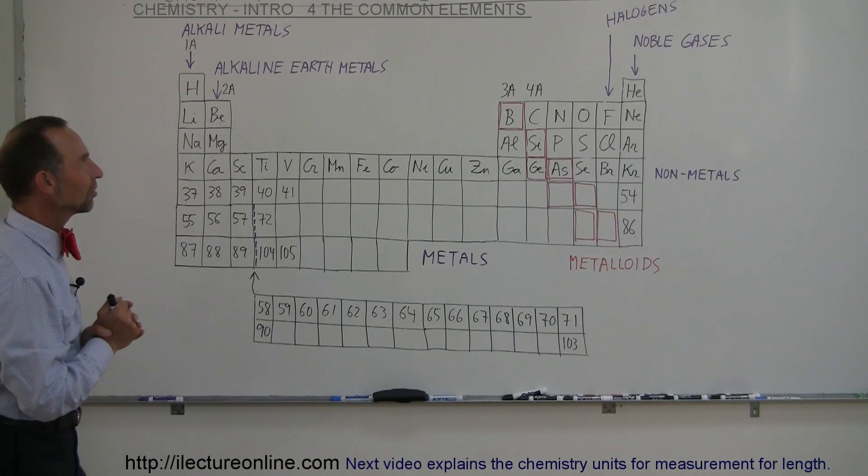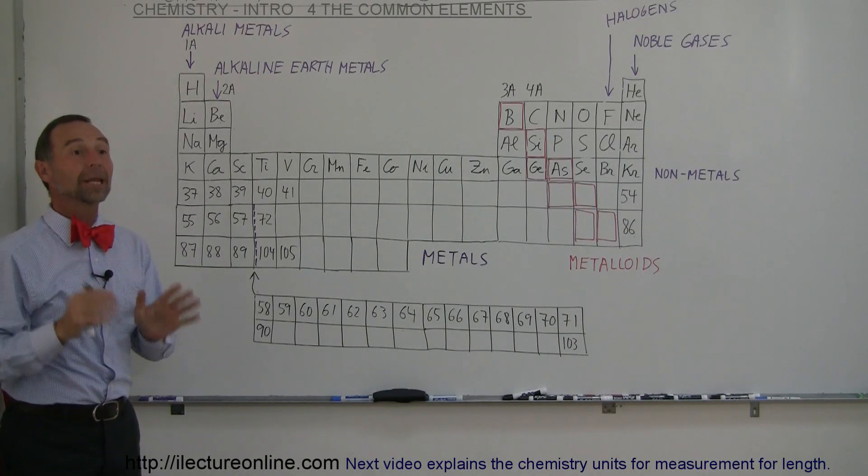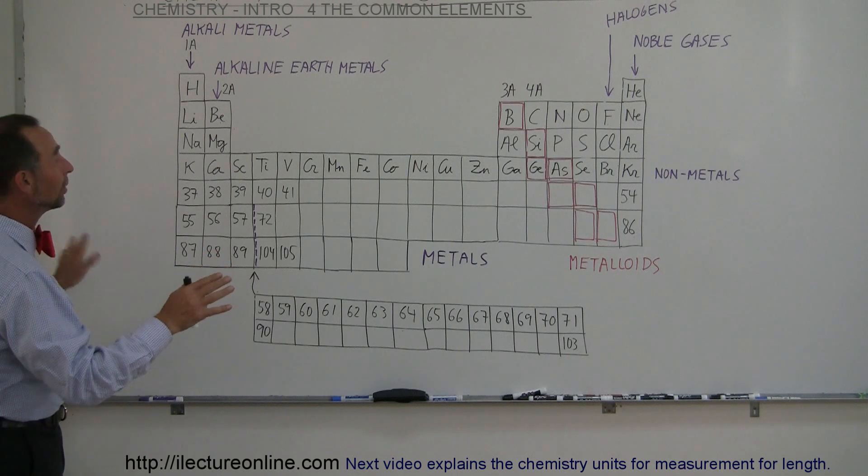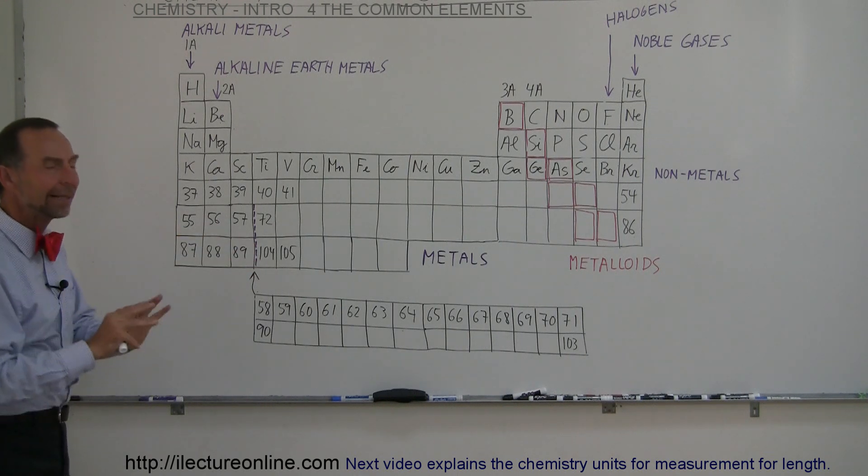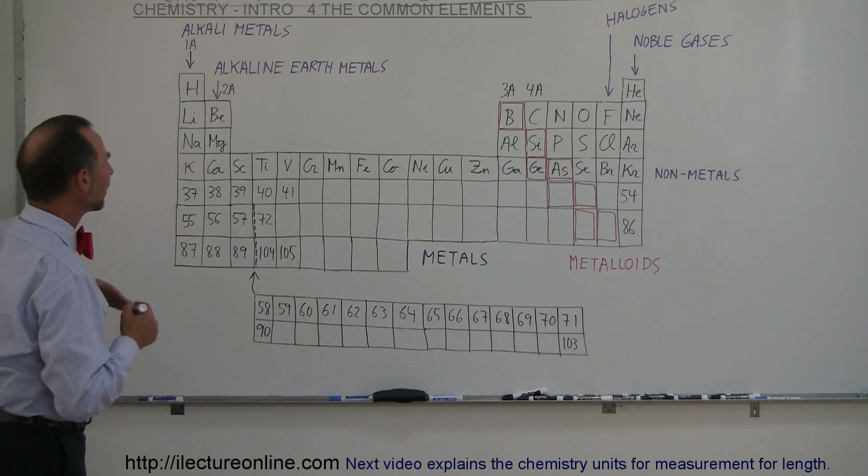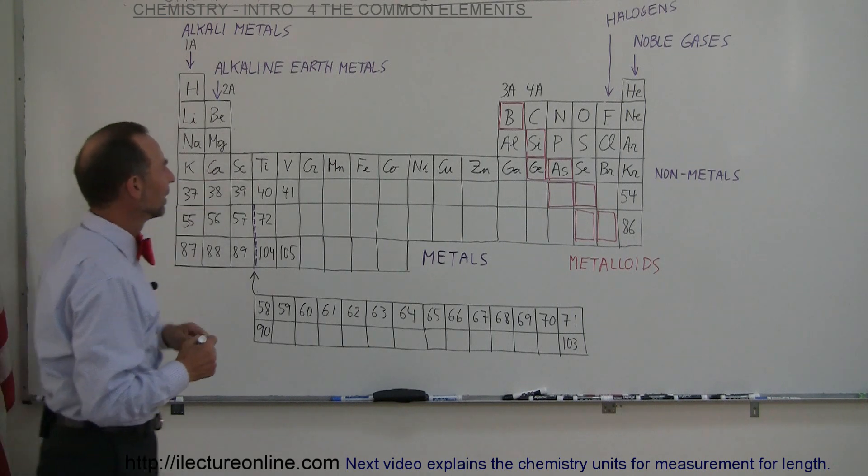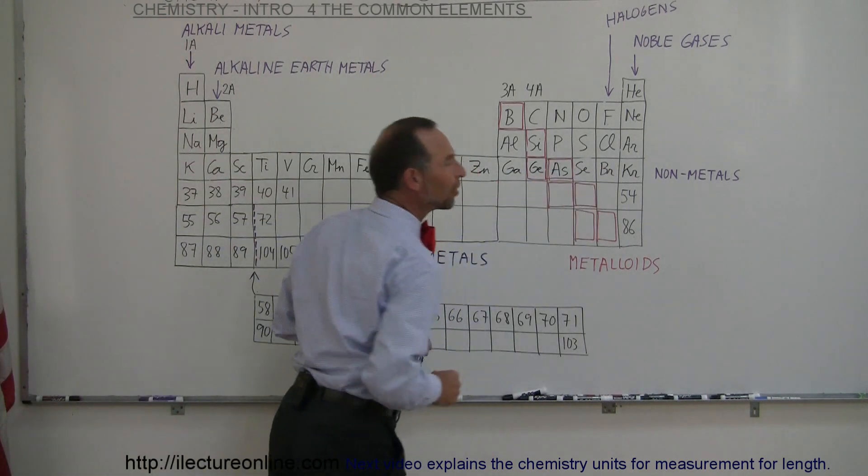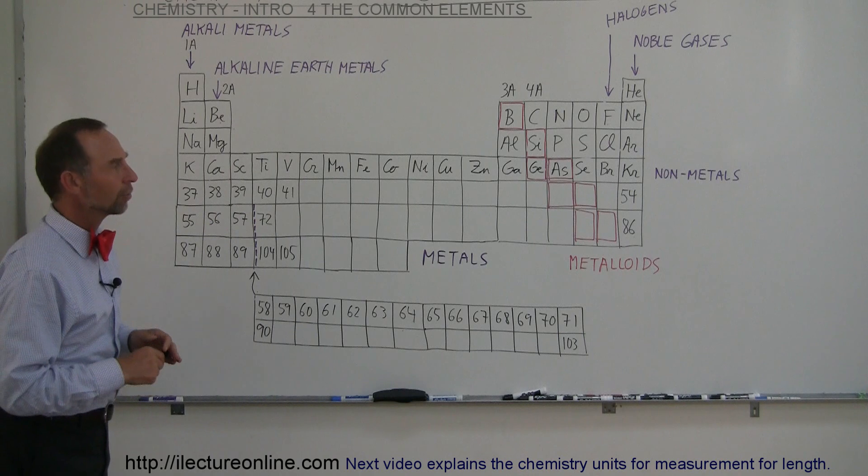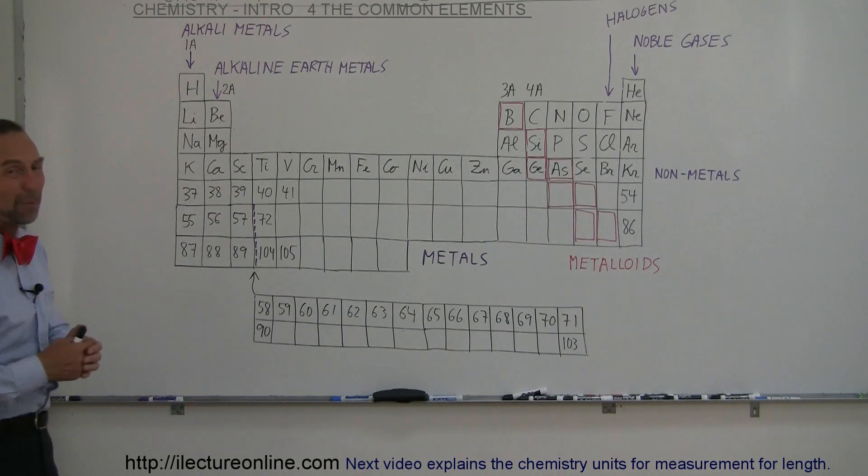Our next video on chemistry is a closer look at the common elements. So here we have the same periodic table. Again, we understand a little bit about the layout of the table, but now what I've done is I've filled in the first 36 elements on the periodic table, and those are not all the more common ones or commonly known ones.